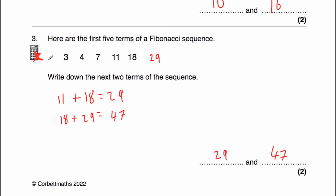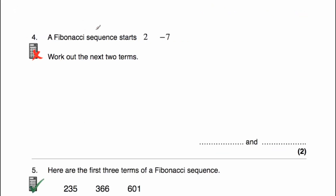Let's have a look at question number four. Question number four says if a Fibonacci sequence starts two, negative seven, work out the next two terms. To find the third term, we're going to add the first and second term. So we're going to do two plus negative seven. When we add negative seven, instead of going up seven, we're going to go down seven — so we're going to do two take away seven. And two take away seven is equal to minus five, or negative five. So the next term would be negative five. Another way to think of it: if you're at negative seven and you add two, you go back up two, so you get to negative five.